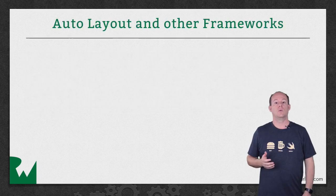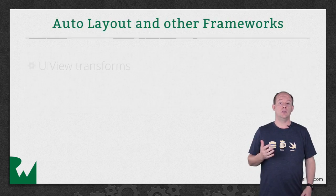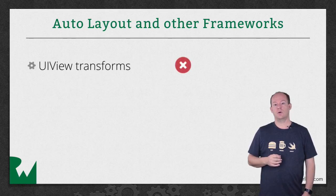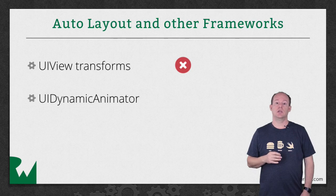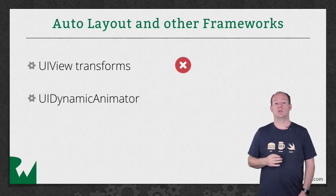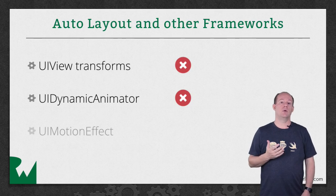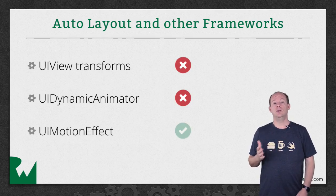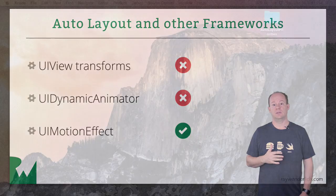You should know, whether you're animating your Auto Layout changes or not, that UIView transforms do not play nicely with Auto Layout. Also, if you're using UIKit Dynamics, you should let the UIDynamic Animator control your views, not Auto Layout. But if you're using UI motion effects, like the parallax effect when you tilt your device, you can use those together with Auto Layout.